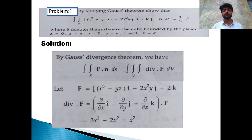Divergence of F is equal to dou by dou x into i cap, plus dou by dou y into j cap, plus dou by dou z into k cap, dotted into vector F. Since i dot i, j dot j, k dot k each equal 1 and the cross components are 0, the divergence of F simplifies to x squared.